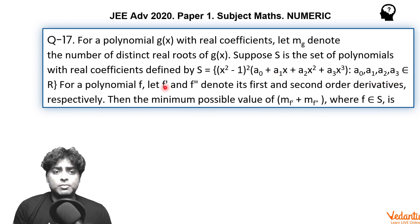a₀, a₁, a₂, a₃ belong to the set of real numbers, means this second factor is not fixed. S can have so many functions as its elements. For a polynomial f, let f' and f'' denote its first and second order derivatives respectively. Then the minimum possible value of m_f' plus m_f'' where f belongs to S.